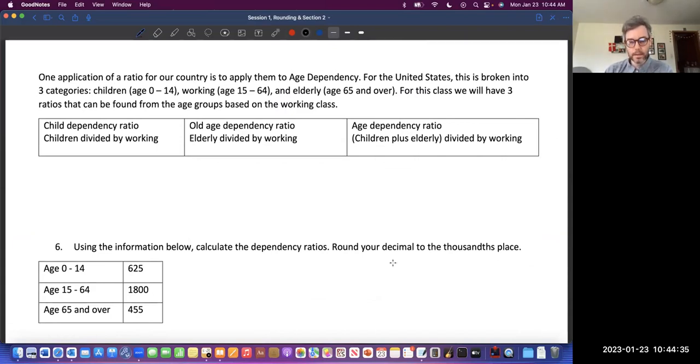So child dependency ratio, this all has to do with working age. The idea is the denominator, what we're going to divide by, is the group that is of working age. In this book, we'll define it working age is 15 to 64.